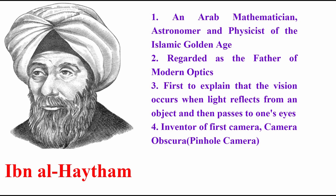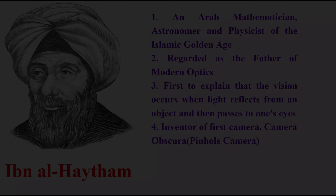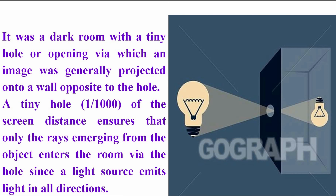Now let's see what is basically a camera obscura or pinhole camera. It was a dark room with a tiny hole or opening, via which an image was projected onto a wall opposite to the hole. The most important part of its construction was the hole's size — it should be at least one-thousandth of the screen distance to ensure that only the rays coming from different points of the object, here a bulb, should enter the hole and reach the other side of the wall, and not rays from other objects.